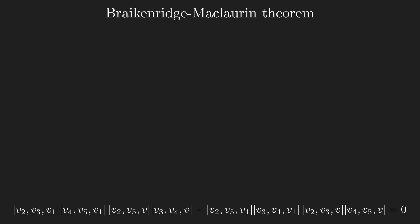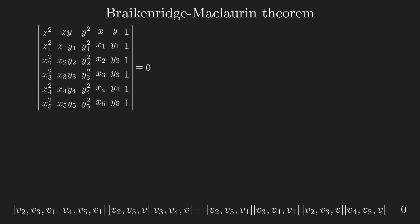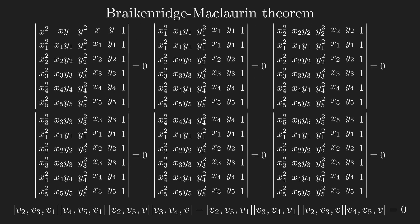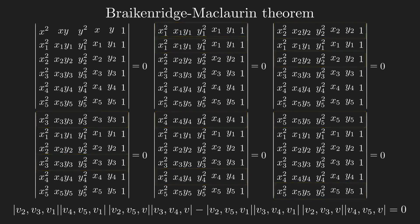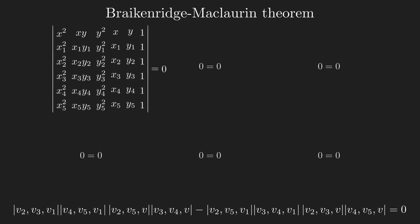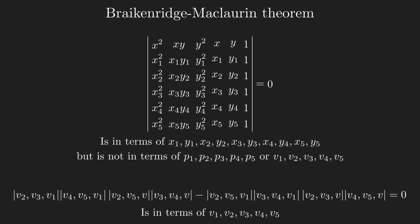However, the conic section equation used for this theorem is this. It has the same properties as the equation that I found where if I sub in any of the 5 points, they satisfy the equation since determinants with two of the same rows always equal 0. This equation also looks neat, but I feel like it feels less natural because it's written using the coordinates of the 5 points, and not the points or vectors themselves, unlike the other equation.